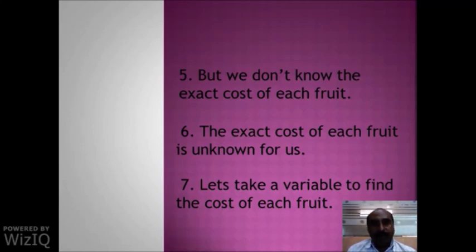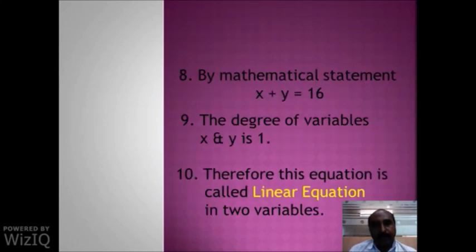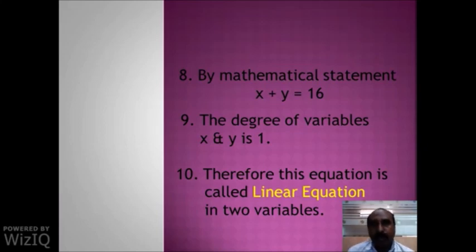The exact cost of each fruit is unknown to us. For that unknown quantity, let us take a variable to find the cost of each fruit. Consider the cost of one mango to be x and the cost of one apple to be y. The sum of these two costs is 16, and the student knows the total cost is Rs. 16.